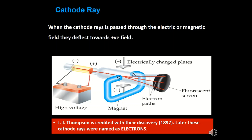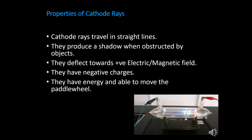J.J. Thomson is credited with the discovery of cathode rays in 1897. Later, these cathode rays were named electrons because the mass-to-charge ratio of cathode rays was exactly equal to that of electrons — same charge, same mass. Regarding properties: cathode rays travel in straight lines when there is no electric or magnetic field present.